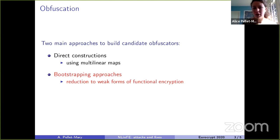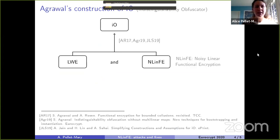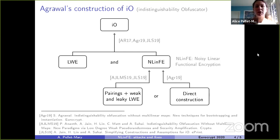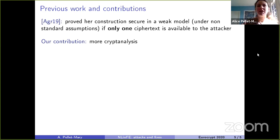More formally, this is a construction proposed by Shweta last year. She proved that if you have a primitive called noisy linear functional encryption and under the LWE assumption you can combine both to have indistinguishability obfuscation in a provable way. So you only need to build noisy linear functional encryption to build IO. Shweta also did a cryptanalytic study and proved that under some non-standard assumption, if the attacker has only access to one ciphertext then they cannot break the scheme.